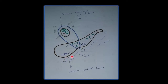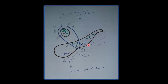In the lateral part, there is one artery, three nerves, and one vein. The artery is the recurrent meningeal branch of the lacrimal artery. The nerves are the lacrimal, frontal, and trochlear nerves — you can remember them as LFT. Lacrimal and frontal are branches of the ophthalmic division of the trigeminal nerve, while trochlear is the fourth cranial nerve. The vein is the superior ophthalmic vein.